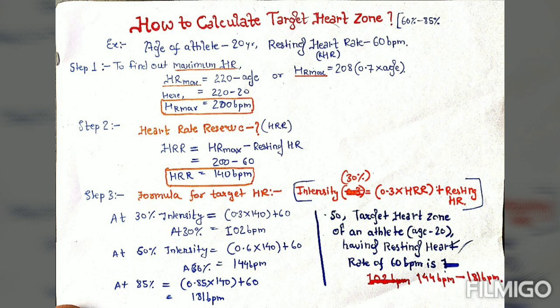To find out the target heart rate zone, first we find the maximum heart rate an athlete can achieve. The formula is: 220 minus age, or alternatively 208 minus (0.7 × age). For an individual aged 20 with a resting heart rate of 60 beats per minute, the maximum heart rate is 200 beats per minute.